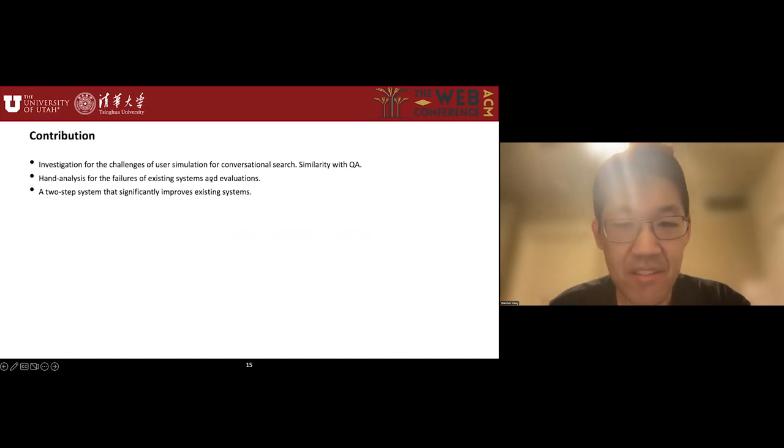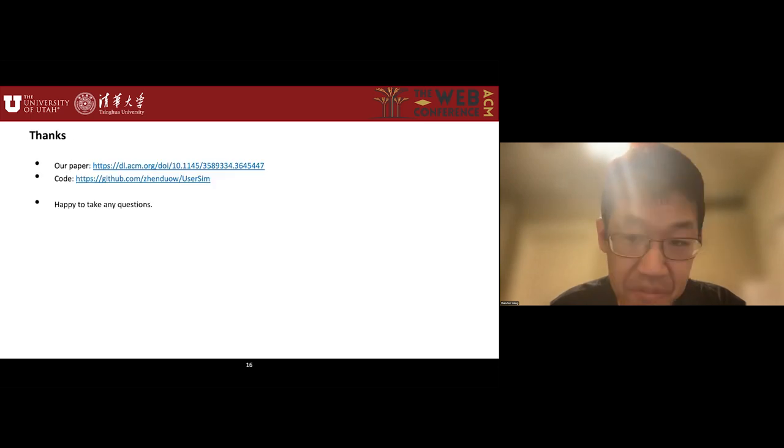To summarize the contribution of our work, we investigate the challenges of user simulation and the problems of existing systems and evaluations. We share our findings in this process, which is the primary contribution of this work, and we propose some methods to address them. As a solution, we demonstrate a simple two-step generation system which significantly improves existing systems. Thank you for checking out our work. Our paper and code are available online. I'm now happy to take any questions.